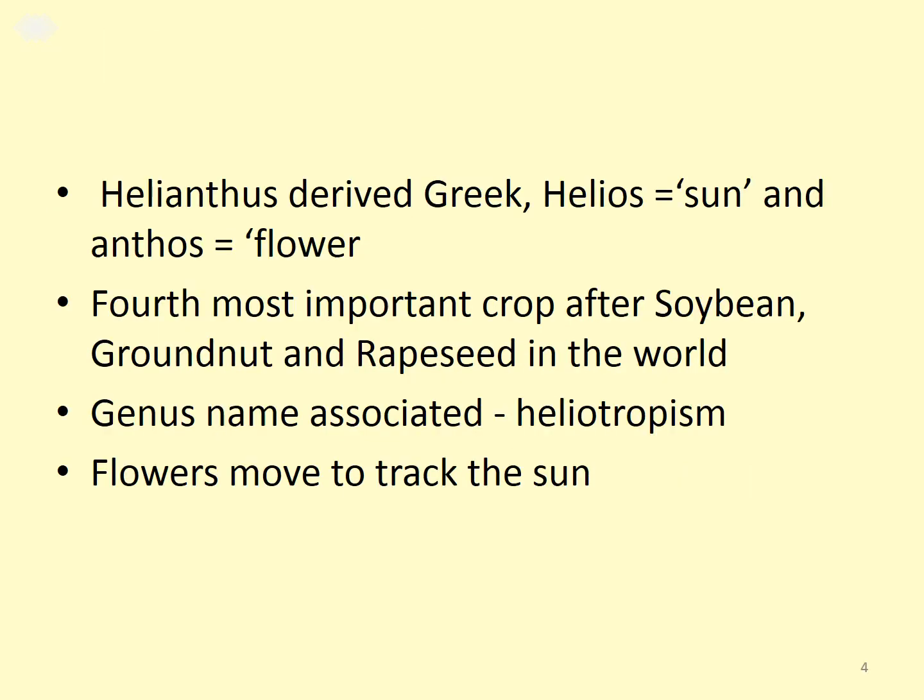Helianthus is derived from the Greek word 'helios' meaning sun and 'anthos' meaning flower. It is the fourth most important crop after soybean, groundnut, and rapeseed in the world. The genus name is associated with heliotropism — that is, attraction towards sunshine — and the flowers move to track the sun.